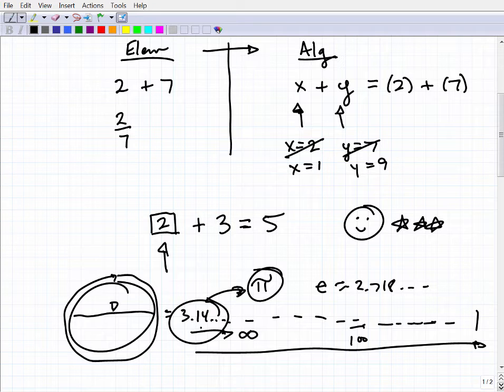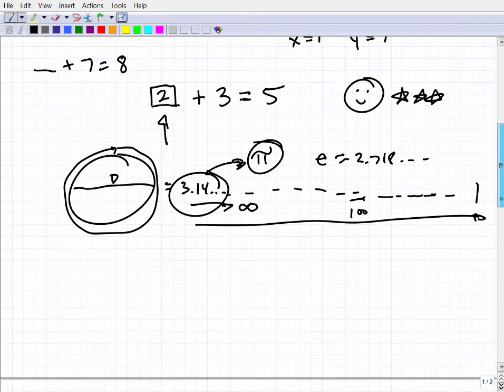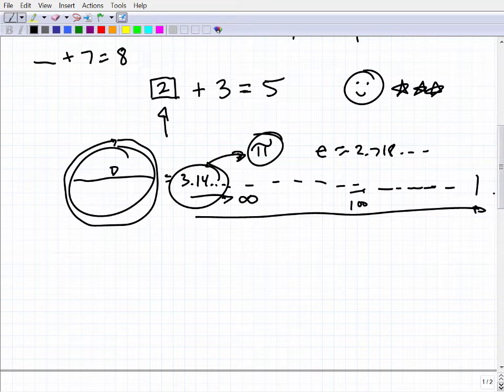So these are symbols—letters, boxes, circles, even something like this: blank plus 7 equals 8. This little underline we could consider a variable. It's a symbol, a placeholder for a number.